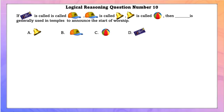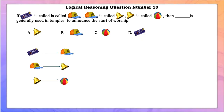Logical reasoning question number 10. If dairy milk chocolate is called cap, and cap is called bell, and bell is called ball, then what is generally used in temples to announce the start of worship? The item used is a bell, but here bell is called ball. So ball is used to start the worship.